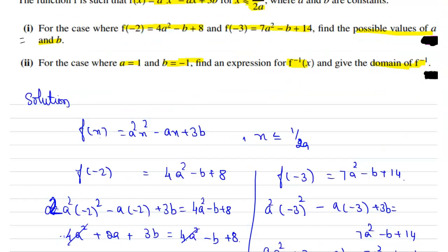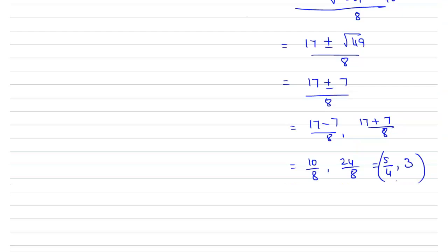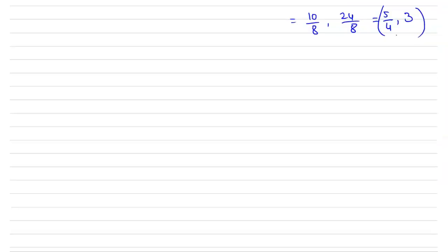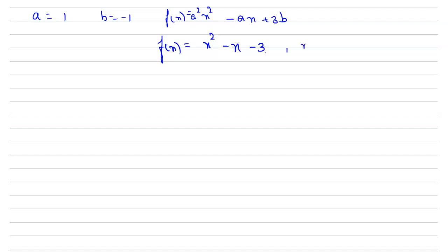For the second part, take a = 1 and b = -1. Substituting into a²x² - ax + 3b gives f(x) = x² - x - 3. The domain condition x ≤ 1/(2a) becomes x ≤ 1/2.